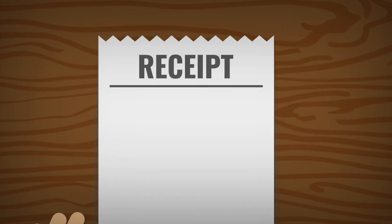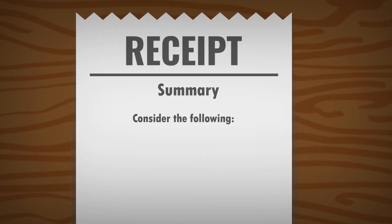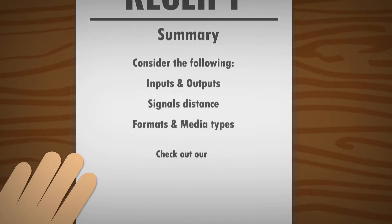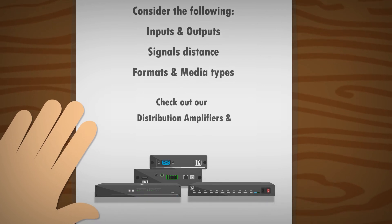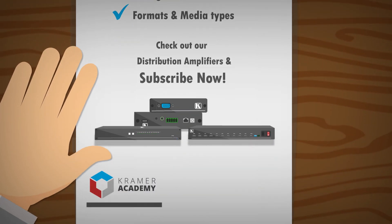Now let's summarize what we've learned. When designing a solution that includes distribution amplifiers, you should consider the following: how many inputs and outputs you require, how far those signals should travel, and what formats and media types you want to support. Click the links in the description below to check out our full range of distribution amplifiers. Also, be sure to click the subscribe button so you can be notified each time we upload a new video. We recommend checking out our other videos to enhance your professional AV knowledge. Thanks for watching this video by Kramer Academy.